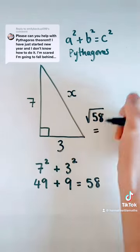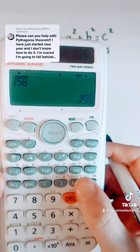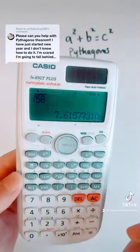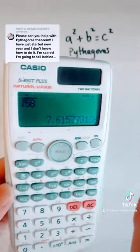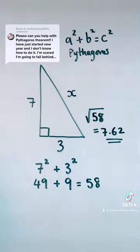We can pop that in our calculator and say what number times by itself makes 58. Press that SD button if you get another third, that square root thing. That is 7.615, so I'm just going to round that to 7.62, and that is that side of the triangle.